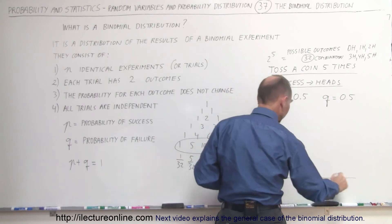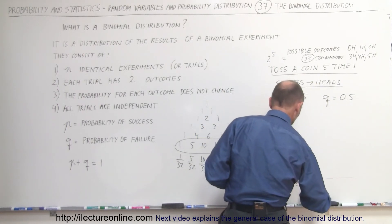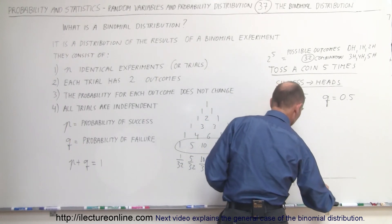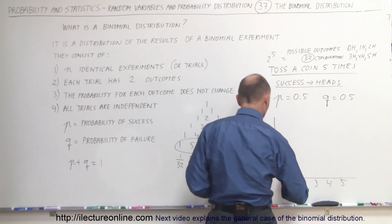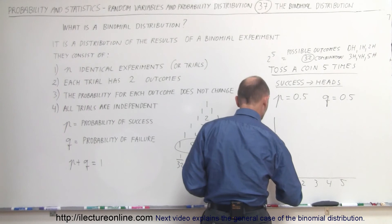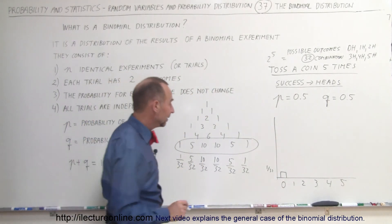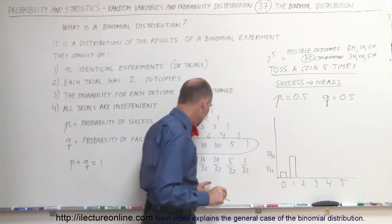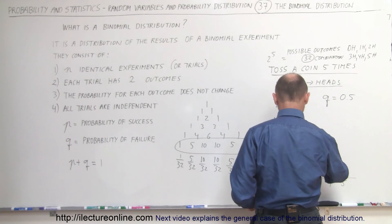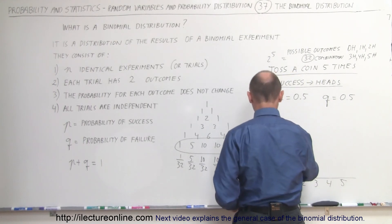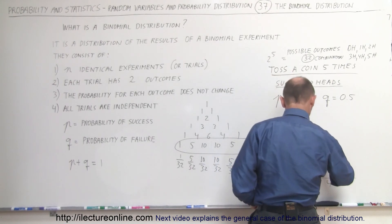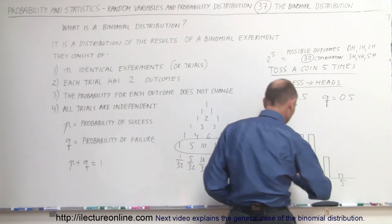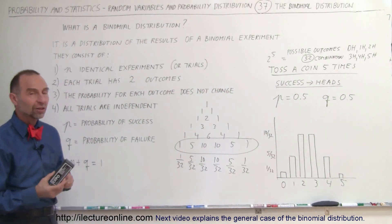So the distribution for a binomial experiment like this — what we call a binomial distribution — would look something like this. On the x-axis we have the quantity of heads: 0, 1, 2, 3, 4, and 5. On the y-axis we have the probability of success. For 0 heads the probability is 1 out of 32; for 1 head it's 5 out of 32; for 2 heads it's 10 out of 32; for 3 heads it's also 10 out of 32; for 4 heads it's 5 out of 32; and for 5 heads it's only 1 out of 32. That's the binomial distribution for tossing a coin 5 times.